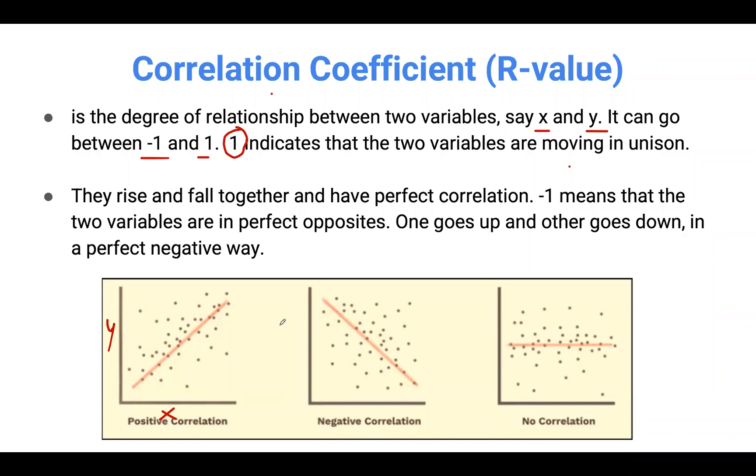Now, with a negative correlation here, we can see that minus one means that the two variables are in perfect opposite. When one goes up, the other one comes down in a perfect negative way.